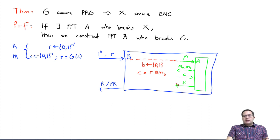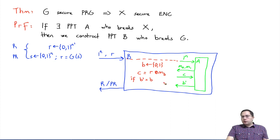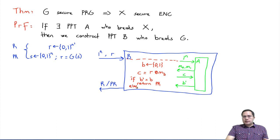Now B receives back some B-prime from the adversary. We have two options: if B-prime is indeed equal to B — so the adversary guessed correctly — then we will output and say pseudorandom; else we will return random.